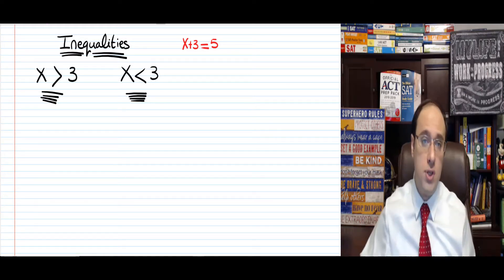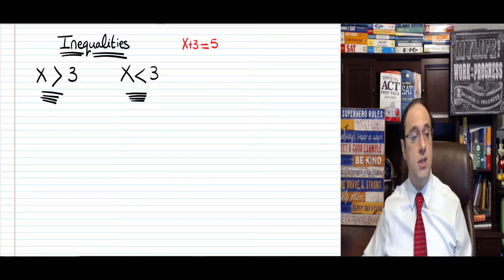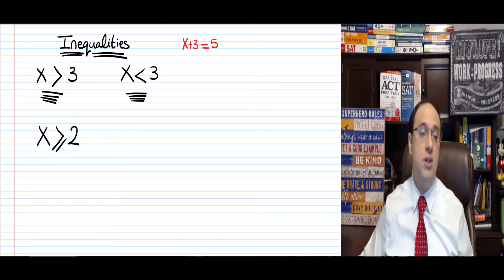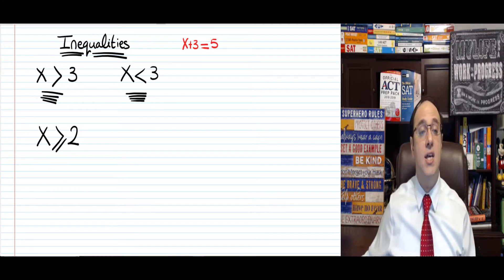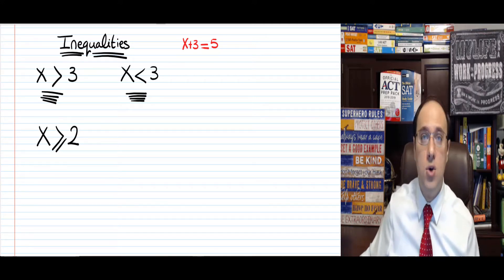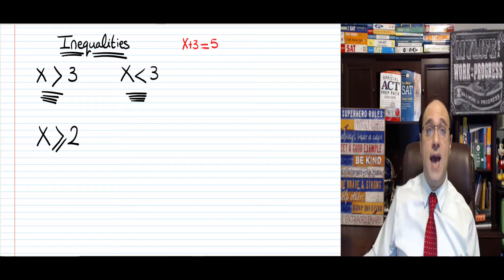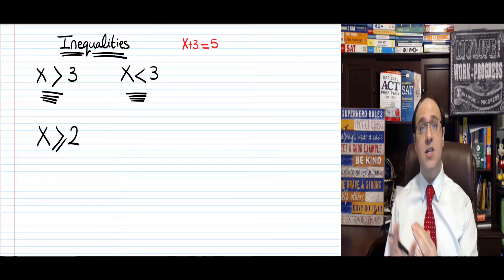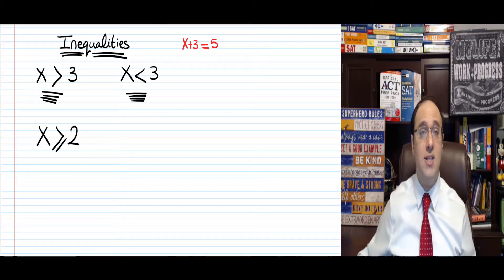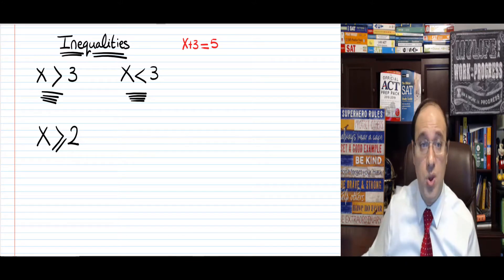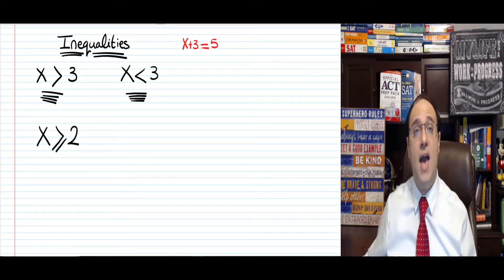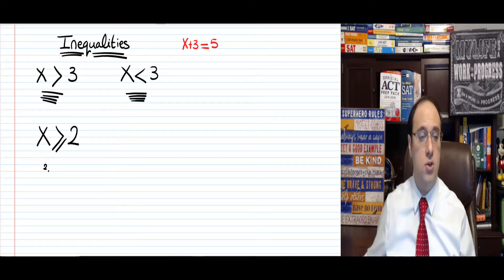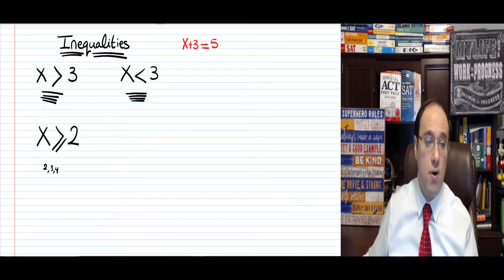We also have two more signs. This sign here means that x is greater than or equal to 2. You see how there is a dash — it's like an equal sign tilted to the right. So x is greater than or equal to 2 means x equals 2 or is greater than 2, like 3 or 4 and so on.